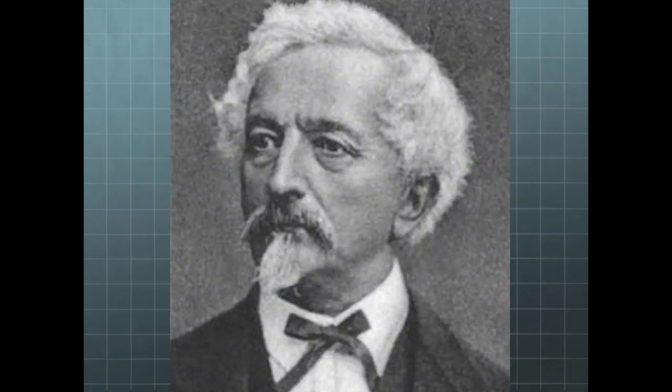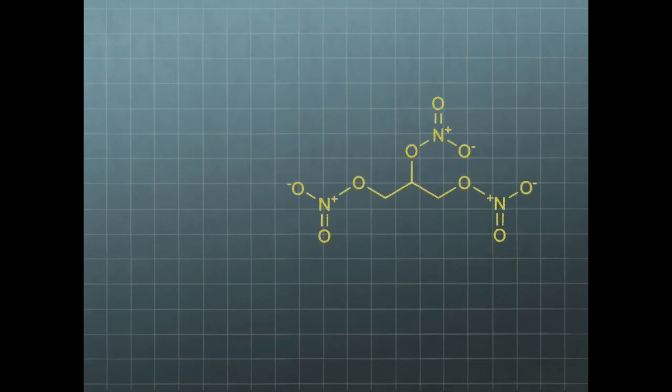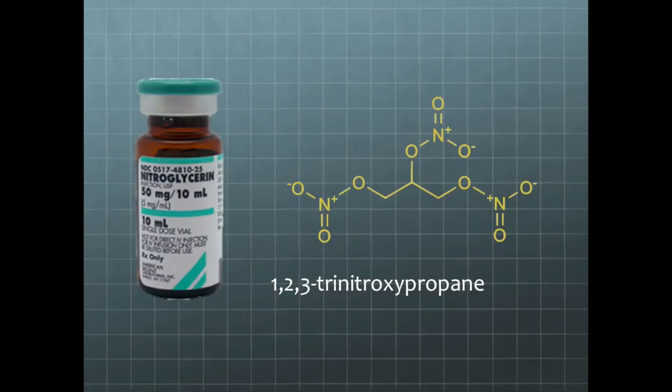Invented by Ascanio Sobrero in 1847, nitroglycerin, or 1,2,3-trinitrooxypropane, is a heavy, colorless, oily and explosive liquid most commonly produced by nitrating glycerol with white-fuming nitric acid.